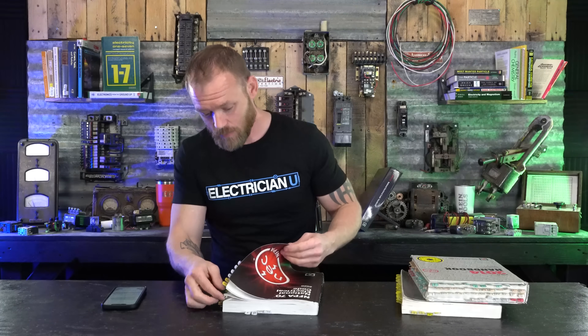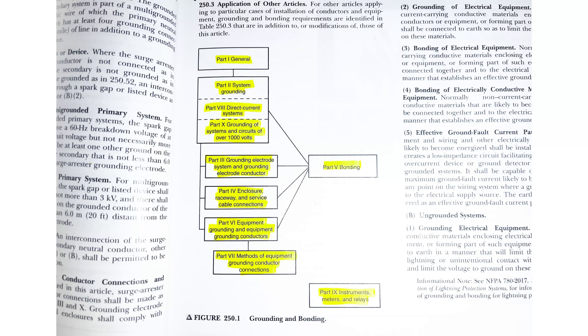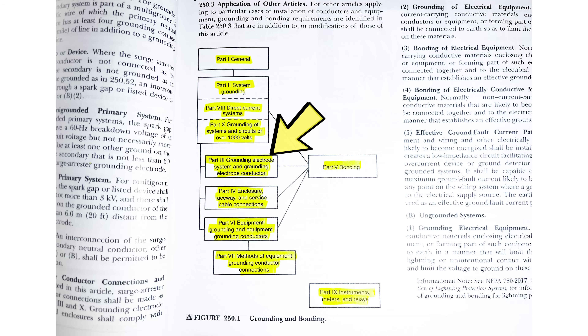Once I've tabbed my entire book, I like to highlight certain things so they're easier to find. The first thing I usually do is go to all of my relevant tables. I go to grounding and bonding — article 250 — and at figure 250.1 I highlight part five for bonding, part three for grounding electrode conductor, and part six for equipment grounding conductors. That lets me know exactly where those things are when I'm working through 250.